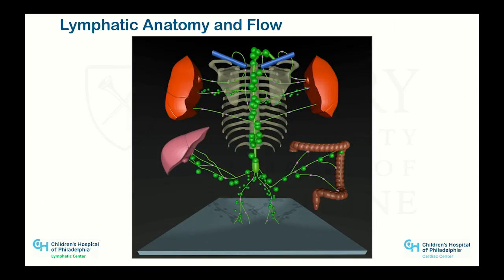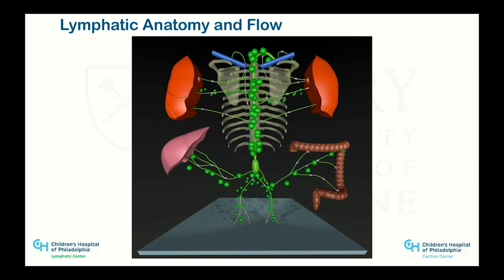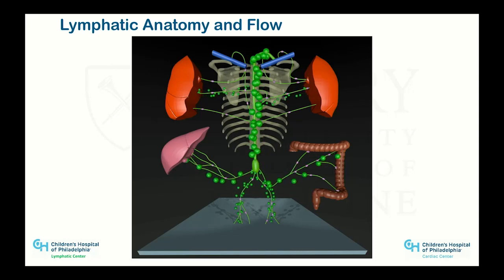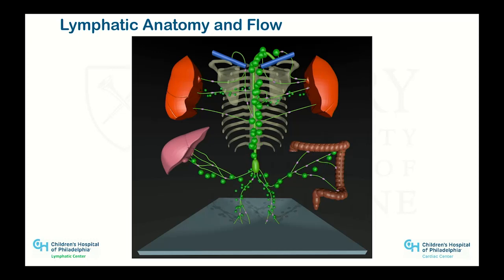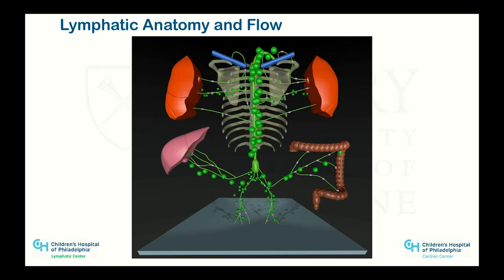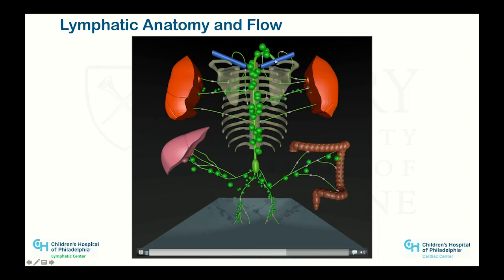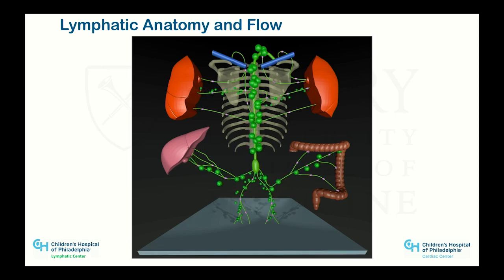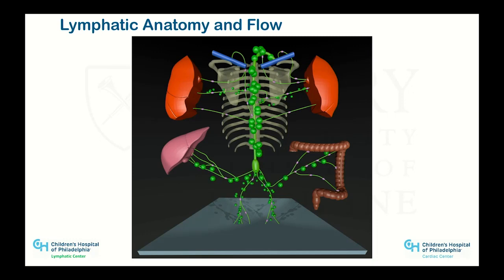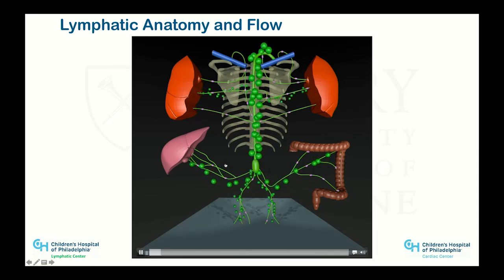To talk about the lymph system, we need to understand the physiology. I'll show you some of the diseases we're dealing with — lymphatic flow disorders. Lymphatic flow generally goes from different organs peripherally to centrally. The main channel for lymphatic drainage is the thoracic duct. In most people, the thoracic duct drains to the innominate vein or the junction of the subclavian, innominate, and IJ on the left side, though there is a lot of anatomical variability — it's more like a fingerprint.